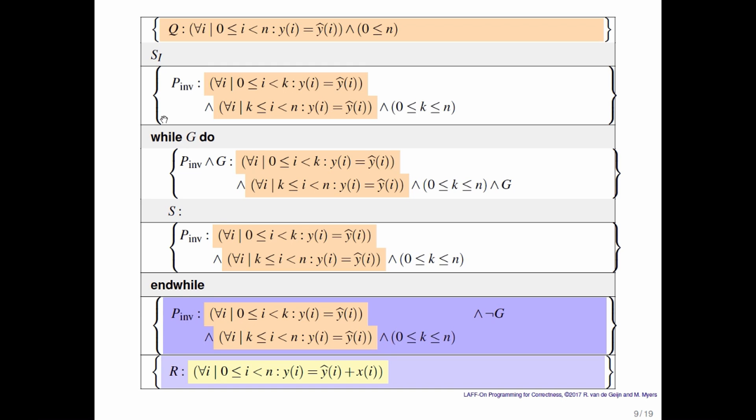But notice that there is no way of picking a loop guard G in such a way that the loop invariant, which says that nothing has been computed yet, implies that we're done. So the fundamental problem with candidate loop invariant A is that you can't find a loop guard such that completion of the loop implies that you've computed the correct result. Therefore, this is not a valid loop invariant.